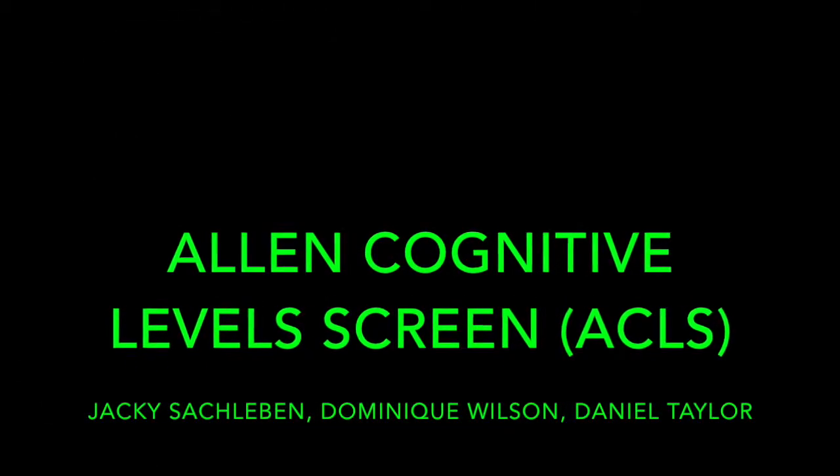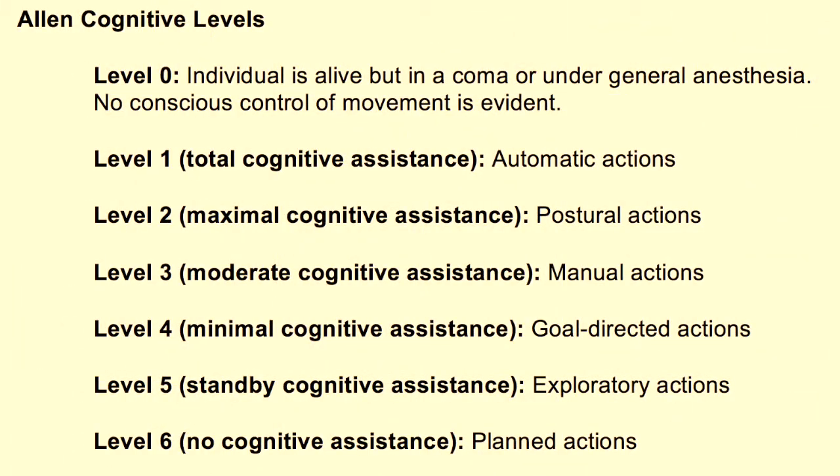The Allen Cognitive Levels screen is based on Allen Cognitive Levels, which is a scale that includes levels from 0 to 6 that identify different cognitive abilities. The assessment is unusual in that it uses the task of sewing stitches to evaluate cognition.